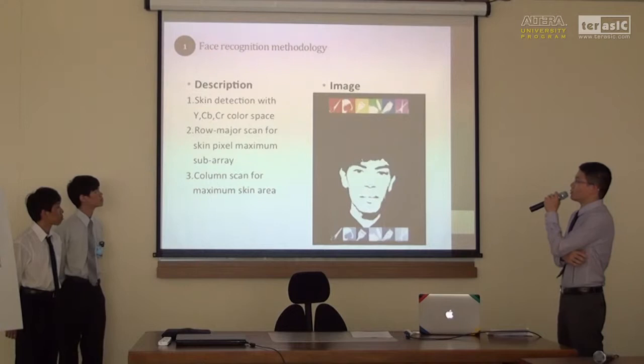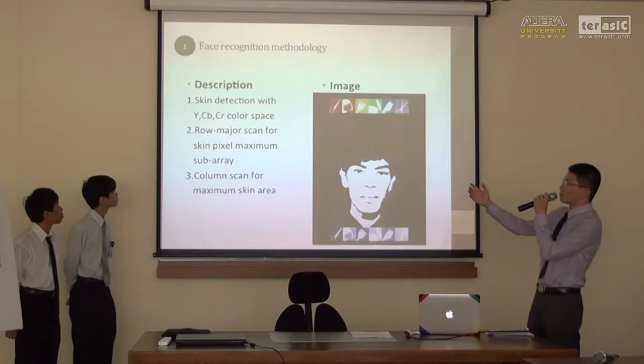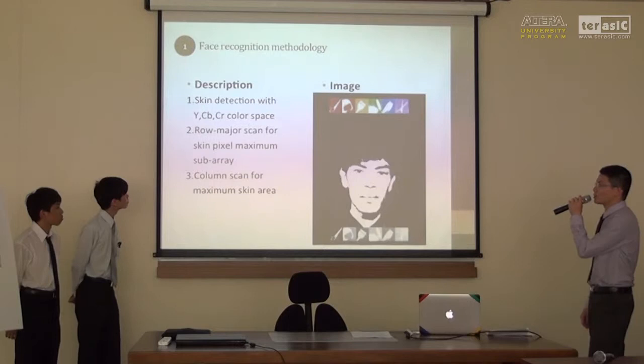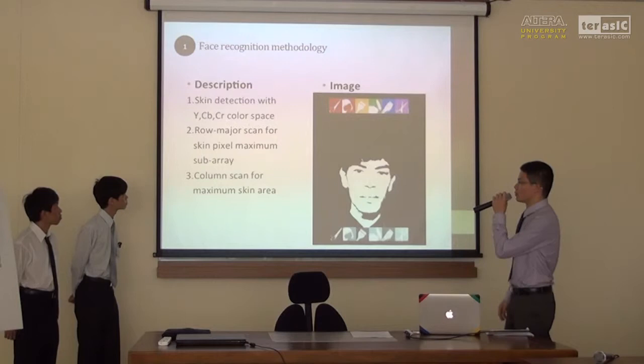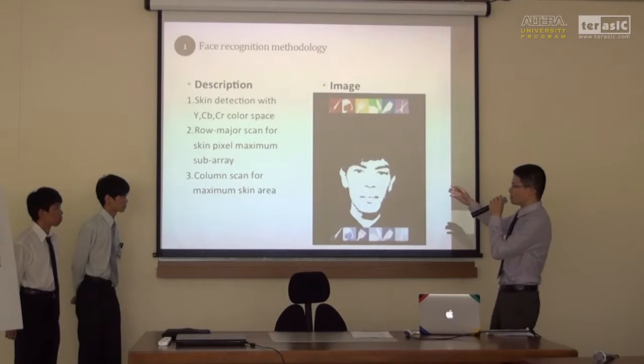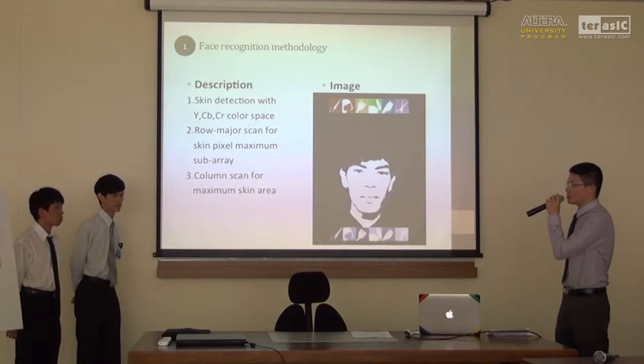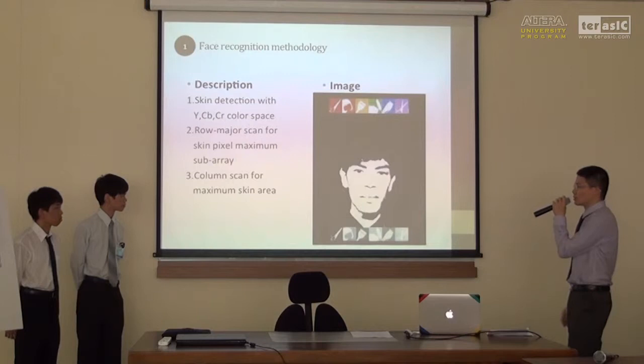First, how do we do face recognition? We will detect skin pixels through the YCbCr color space. Then we measure skin pixels for maximum skin saturation — for example, skin pixels are scored plus 2 and non-skin pixels minus 1. At last, we do a color scan to find out the maximum skin area as the user's face region.